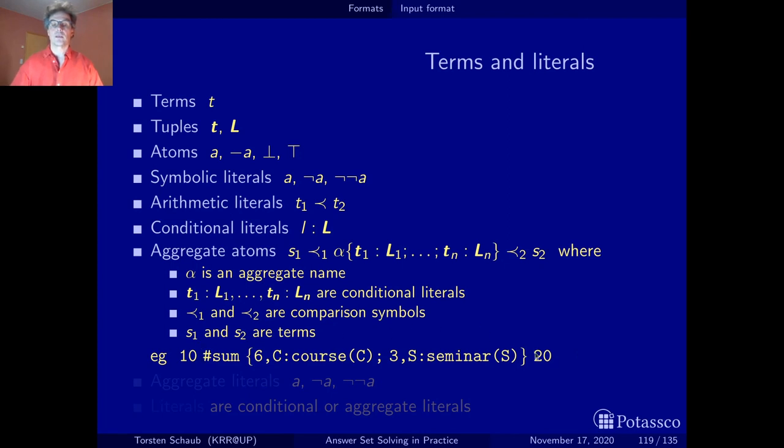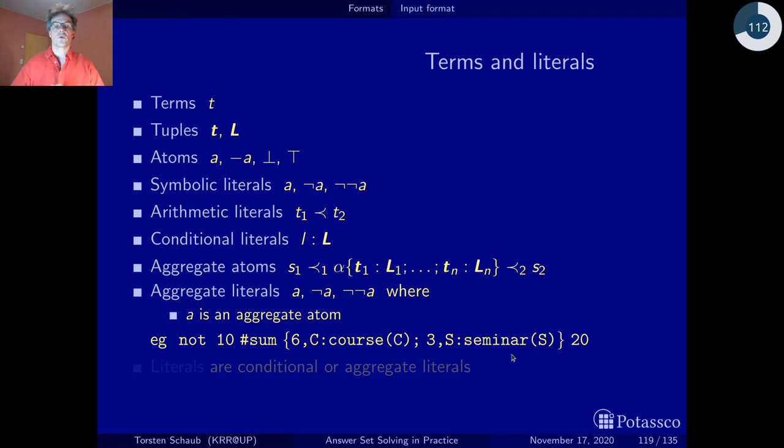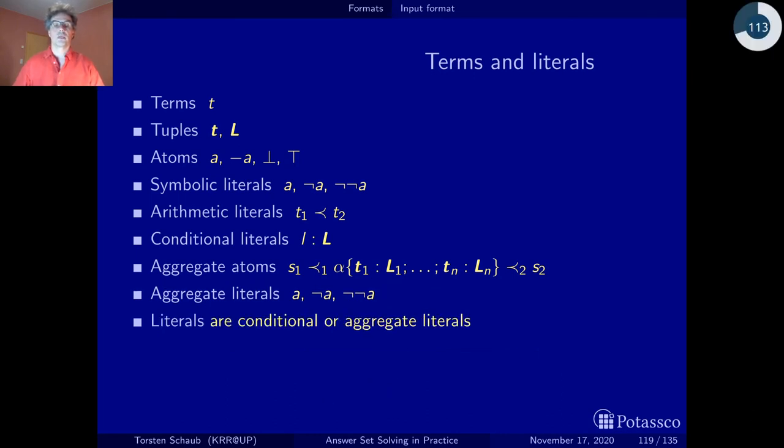In the same way as you can form literals from atoms above, you can also form aggregate literals by negating them once or twice. Here's, for instance, a negated one where you just write a not before what we've seen before. Then literals as such are either conditional or aggregate literals. Keep in mind that the special case of conditional literals is the one where there is no condition, and hence just basic literals—symbolic literals or arithmetic literals—are also included among conditional literals. This is roughly what terms and literals are about. For a detailed account on these guys, consult the Potassco user's guide which you find at potassco.org.